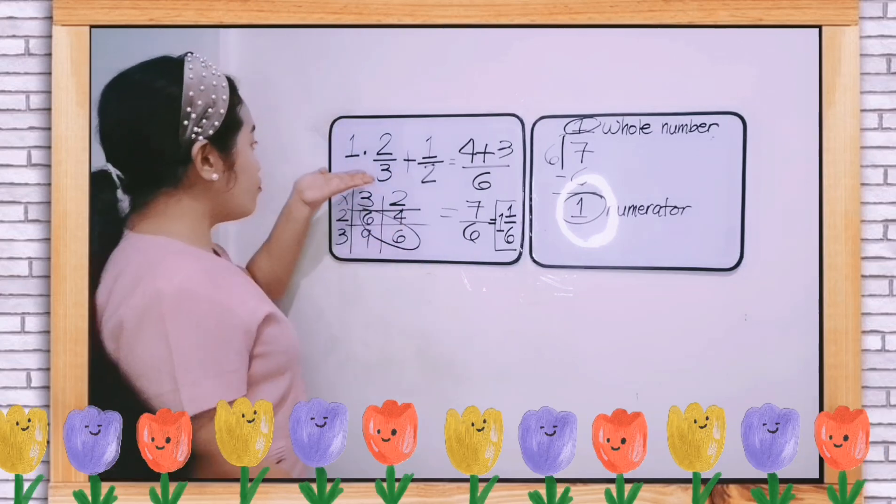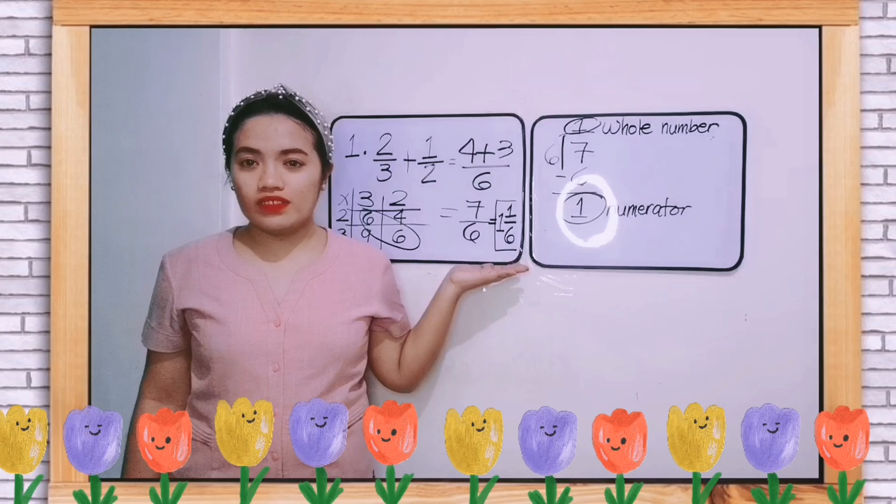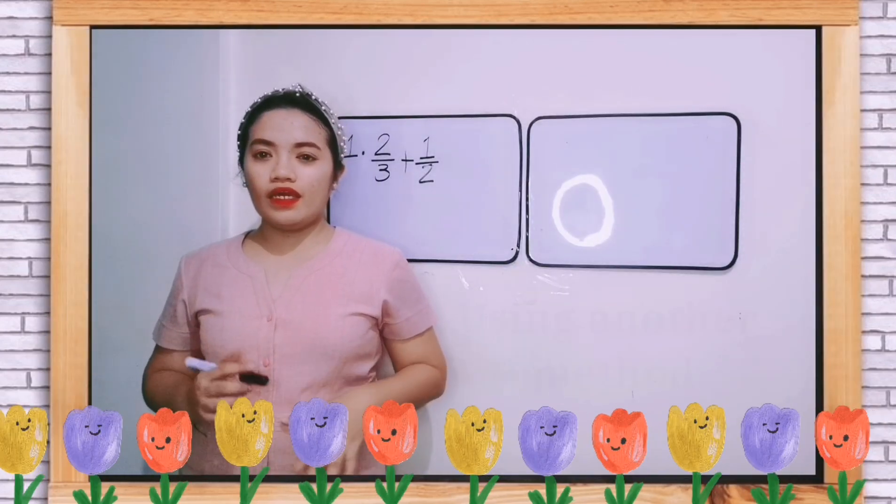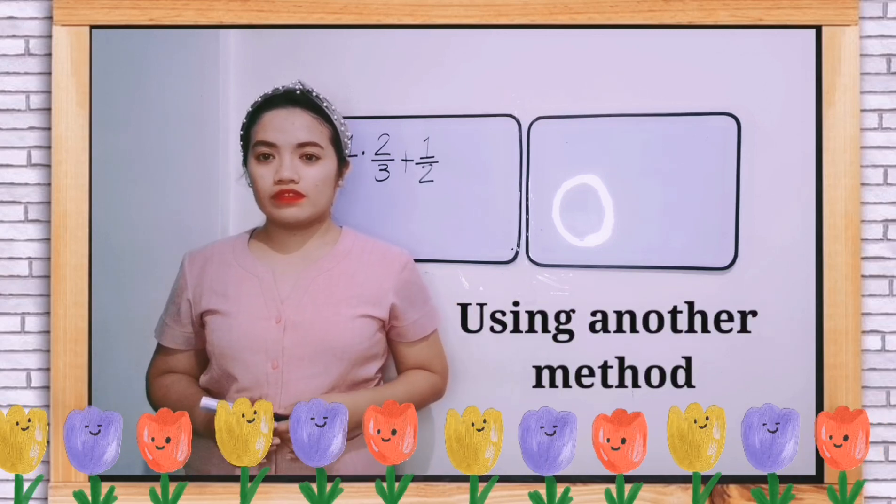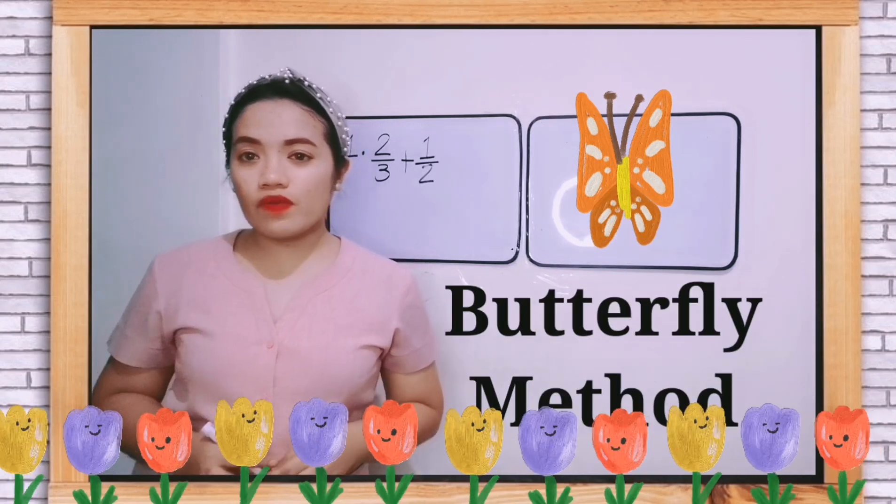So the final answer is 1 and 1 over 6. So the sum of 2 thirds and 1 half is 1 and 1 sixth. So let us solve number 1 the other way around.